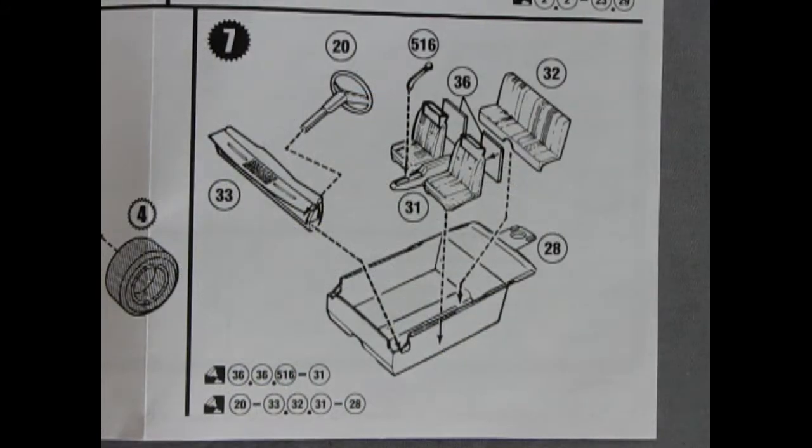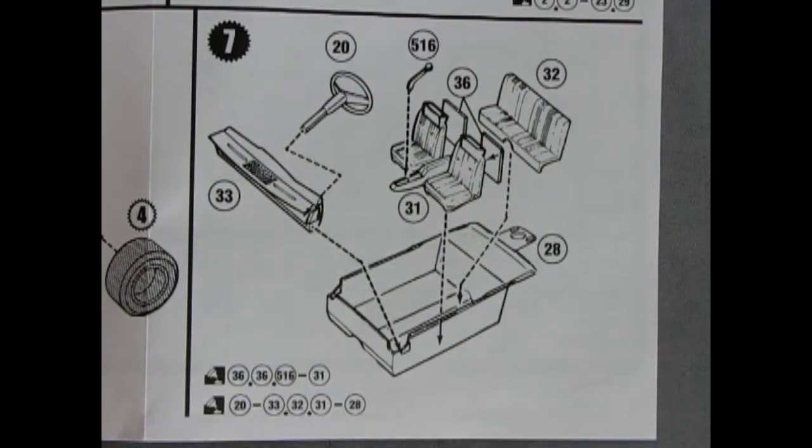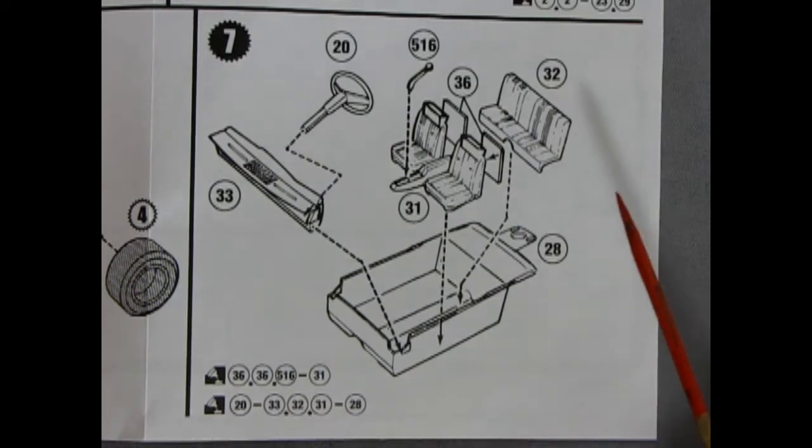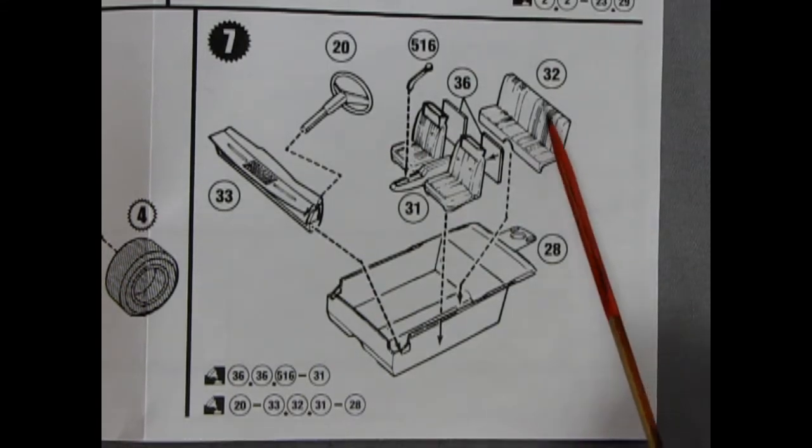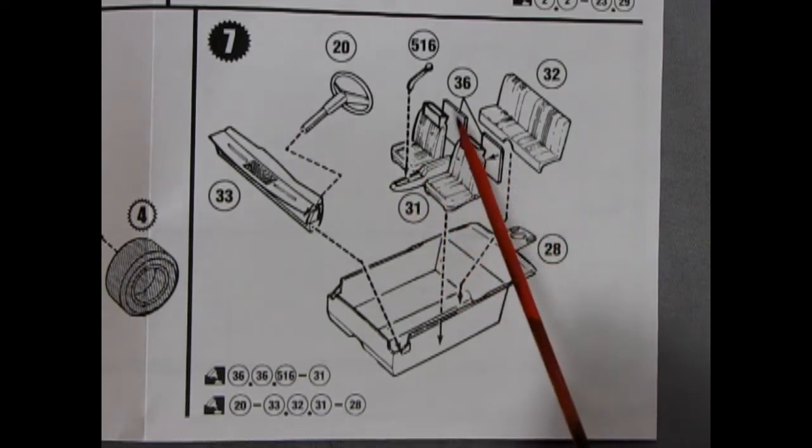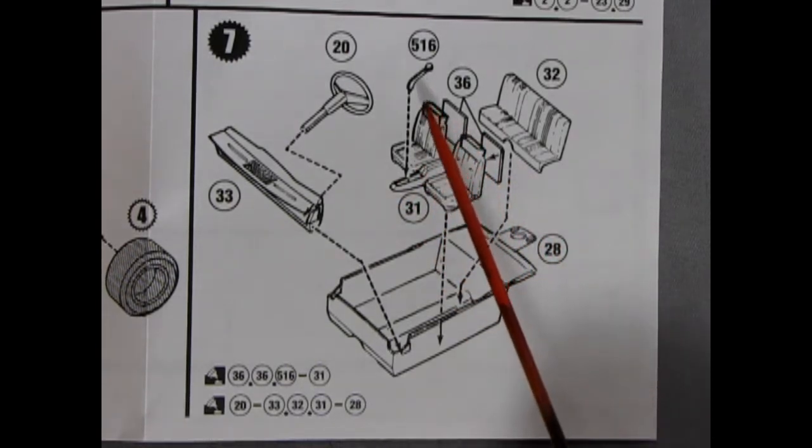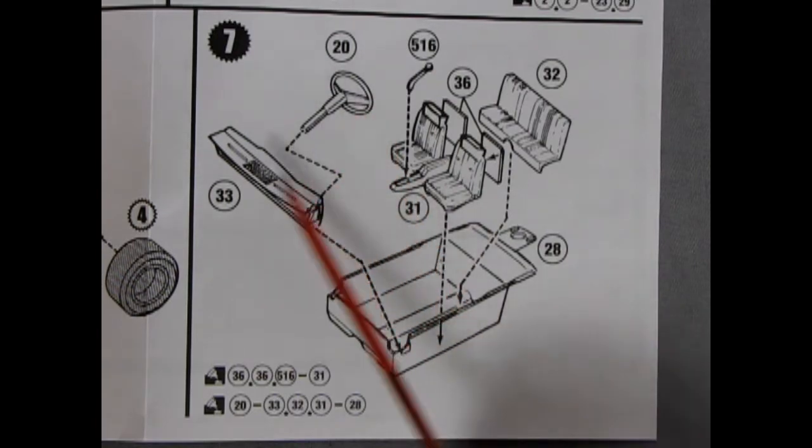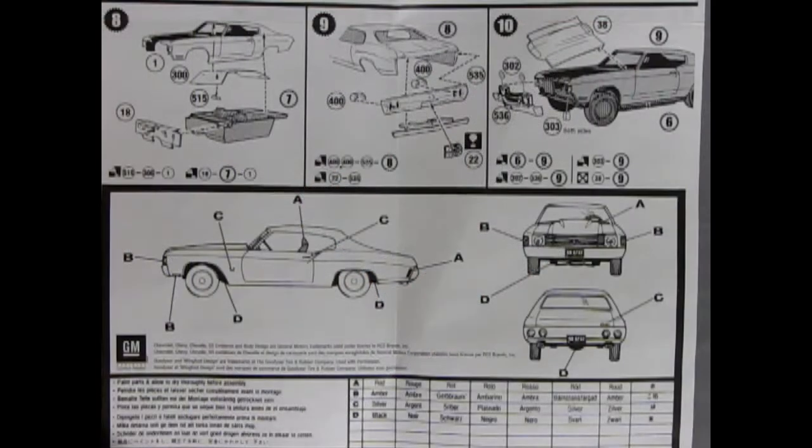Panel 7 shows our interior going in place. It's basically a stock 72 Chevy interior. You get your seat in the back. Your bucket seats with the console molded as one piece. And the two inserts. And then your shifter, steering wheel, and dashboard all going into this interior tub.